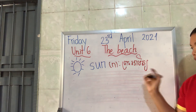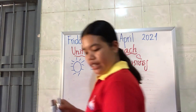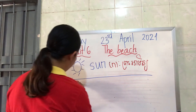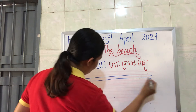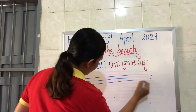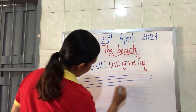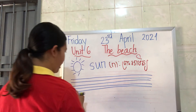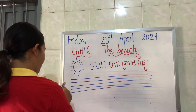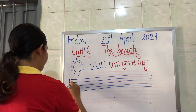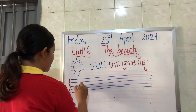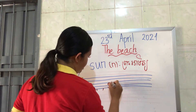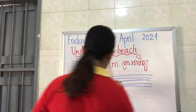Sun in Khmer. So let's count the letters: one, two, three — S-U-N. S-U-N!